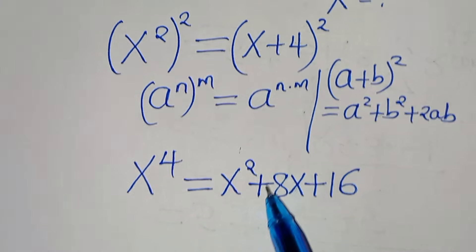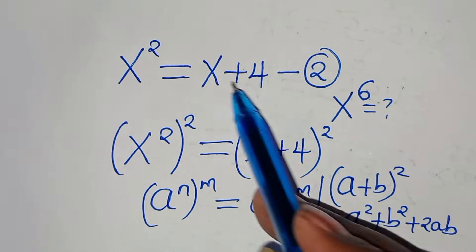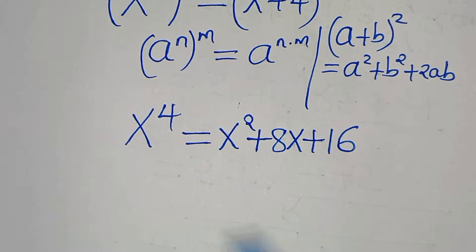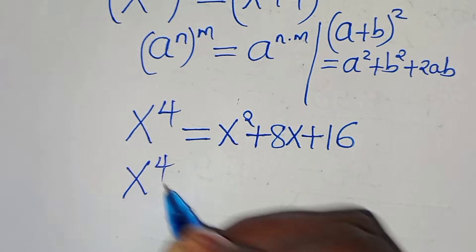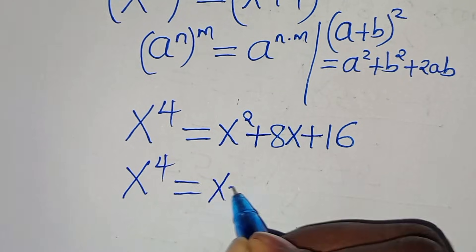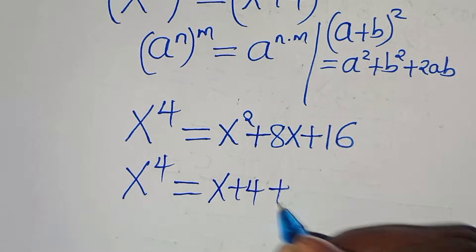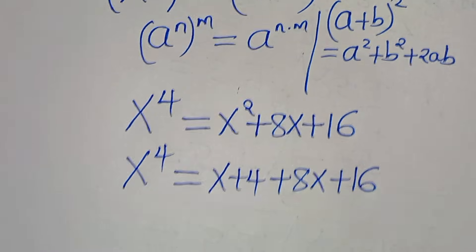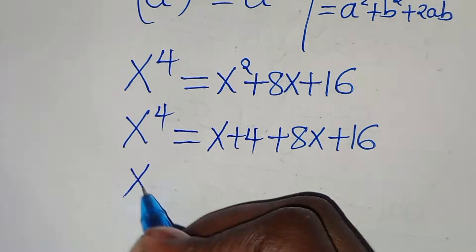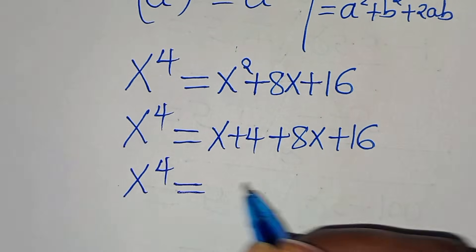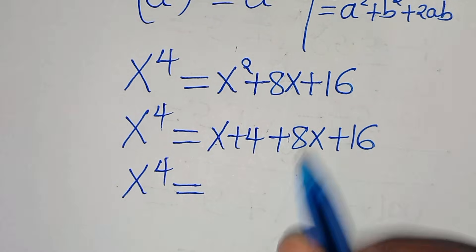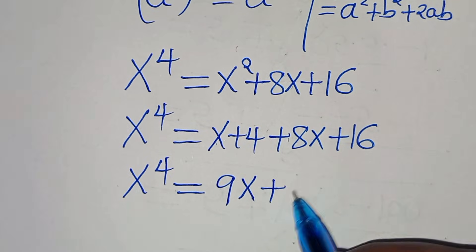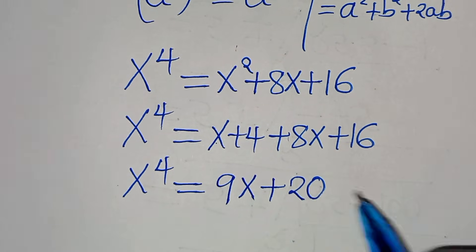We have x squared here, and from equation 2, x squared equals x plus 4. Let's substitute this, so we have x to the power of 4 equals (x plus 4) plus 8x plus 16. This implies x to the power of 4 equals x plus 8x, which is 9x, then plus 4 plus 16, which is 20. So x to the power of 4 equals 9x plus 20.